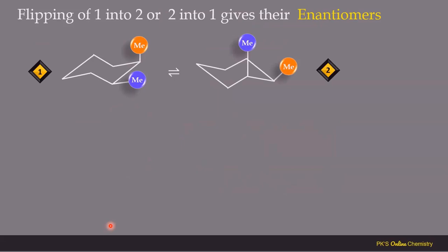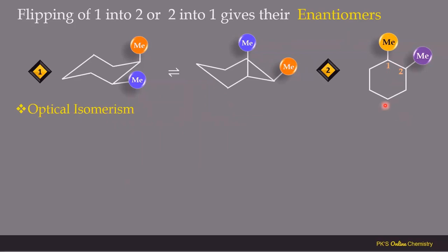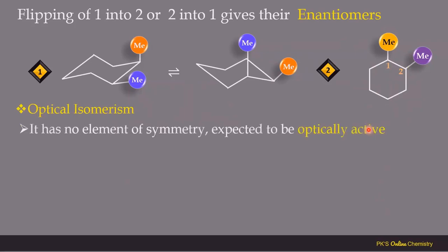Now let's look at the optical isomerism of cis-1,2-dimethylcyclohexane. If we draw a line passing through C1 and C4, it does not bisect the molecule into two equal halves — so there is no plane of symmetry. Even drawing a line through C2 and C5 does not bisect the molecule into two equal parts. Therefore, cis-1,2-dimethylcyclohexane has no element of symmetry and is expected to be optically active, but it was found to be optically inactive.